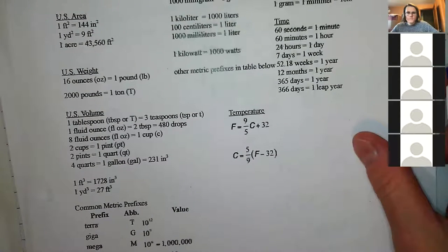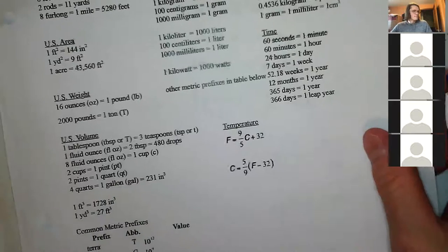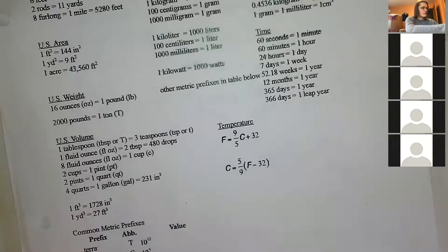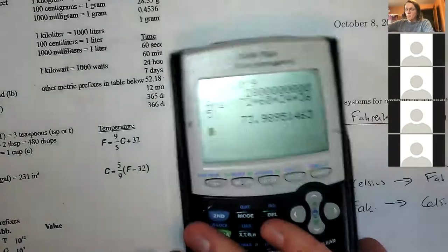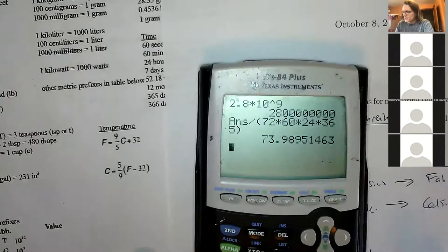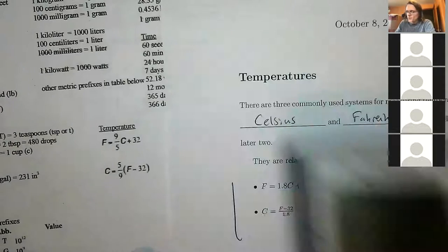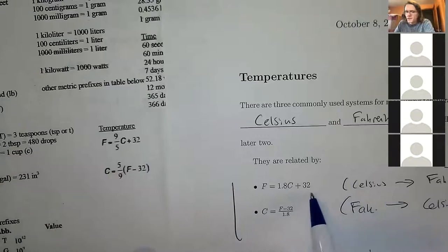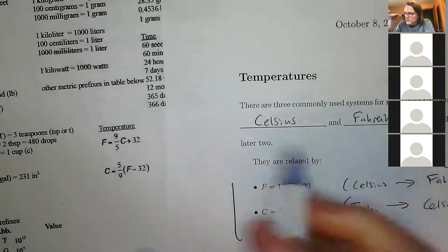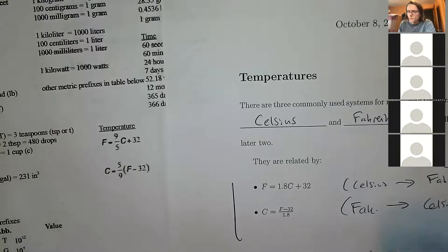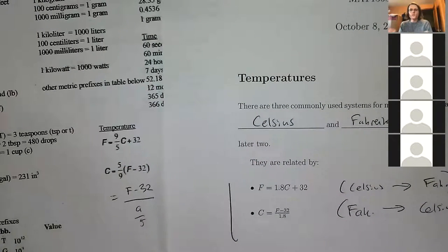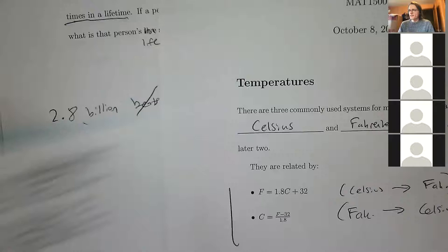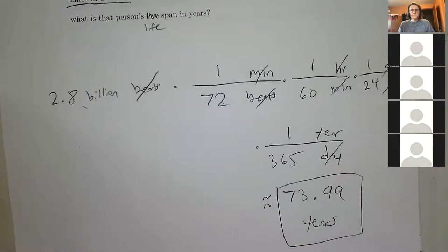The temperature formulas on the sheet look different from what I wrote but are equivalent. The sheet uses 9/5 instead of 1.8 — since 9/5 = 1.8, it's the same. And the Celsius formula written as dividing by 9/5 is the same as dividing by 1.8. Just different ways of writing the same thing.